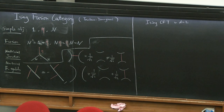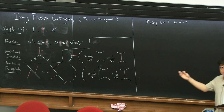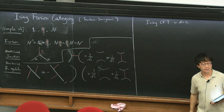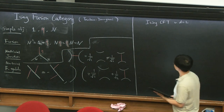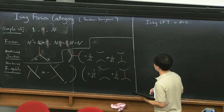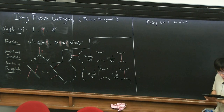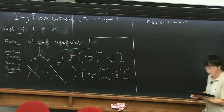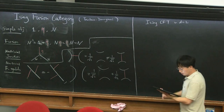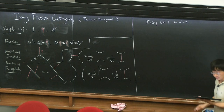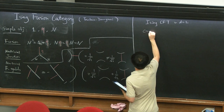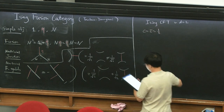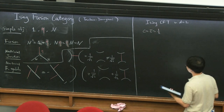This very simple CFT already gives an interesting instance of a non-invertible symmetry generated by a topological defect line. Let us start with a brief review of the CFT. First of all, the CFT has central charge equal to one-half. So it's one of the simplest CFTs.